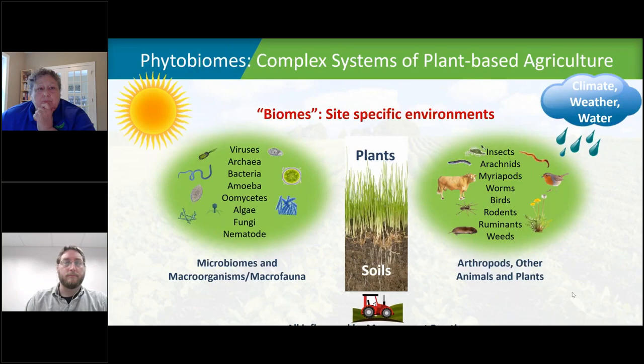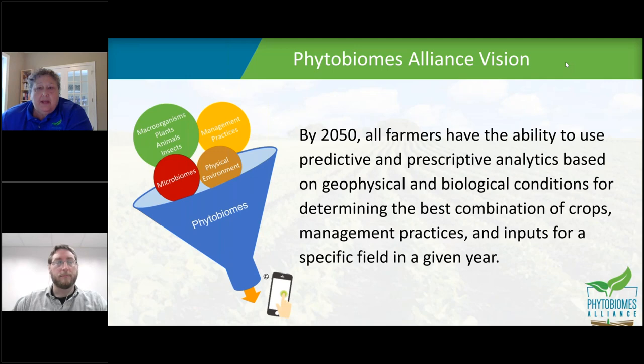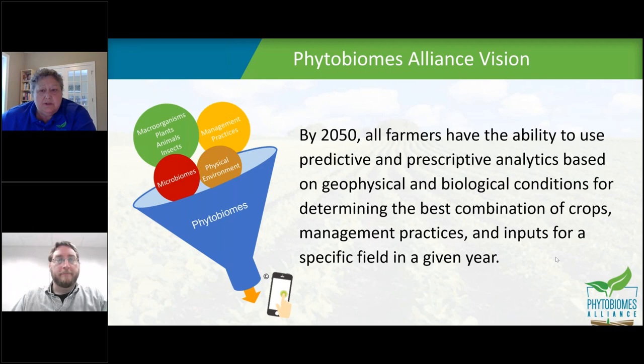Our vision is that by 2050, all farmers will have the ability to use predictive and prescriptive analytics based on geophysical and biological conditions for determining the best combination of crops, management practices, and inputs for a specific field in a given year — really looking towards a true digital agriculture that can work towards finding the most sustainable solution for any particular farming operation at any particular farm.